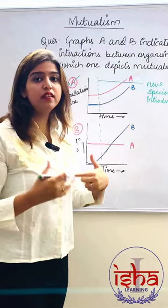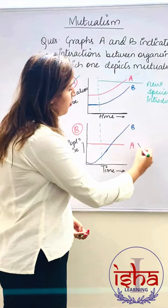In the second case we say ki population A ke size pe koi difference nahi haara. It will not be a mutualistic interaction.